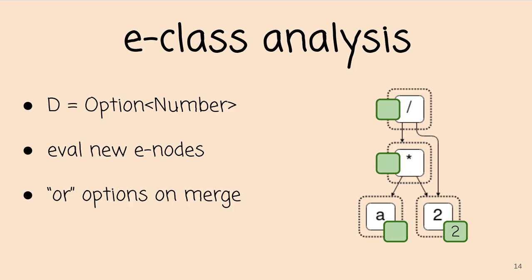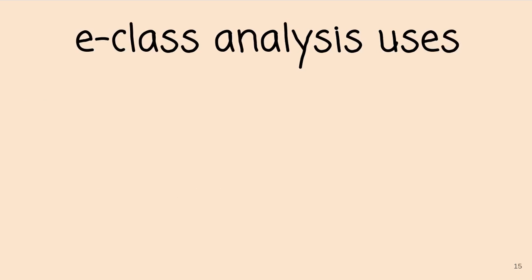And then you need to define how to merge values from that domain when e-classes merge. And if you do that, then egg will automatically propagate those values and attach them to e-classes as you add or merge e-classes. And what this allows you to do is lift program analyses up to the e-graph level in a sort of abstract interpretation flavor.